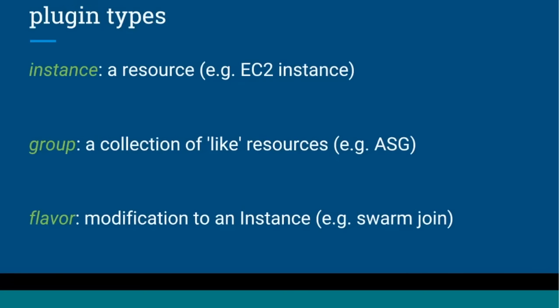Going deeper into plugins: there are currently three primary types in InfraKit. The first is instance plugins — this is basically how resources are actually provisioned. An instance is a single unit of resource, for example an EC2 instance in the case of AWS. An instance plugin is responsible for figuring out how to create, delete, and list resources. Groups are a collection of instances — you can perform operations on group plugins that relate to managing them as a collection, which is the part that resembles a scaling group. You could implement a group plugin that uses autoscaling groups as an example.